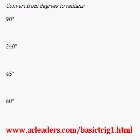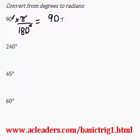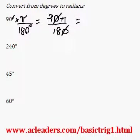Good evening! Tonight I'm going to be converting some degrees into radians, starting with 90 degrees. To do this, we just multiply each angle by pi over 180, and that will transform everything into radians. So we have 90 degrees times pi over 180 degrees. The degrees cancel out, and we get 90 pi over 180. Cancel out the zeros — 9 over 18 is half — so that turns out to be pi over 2.